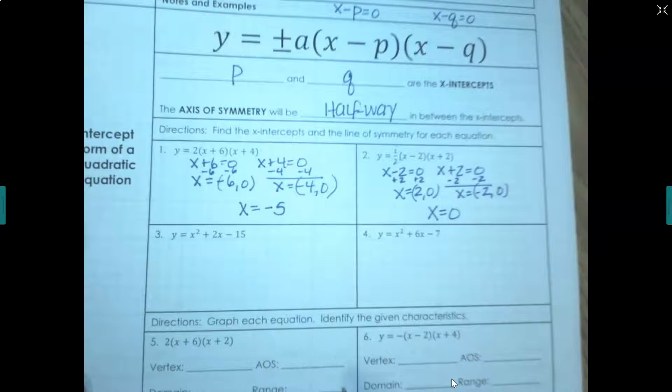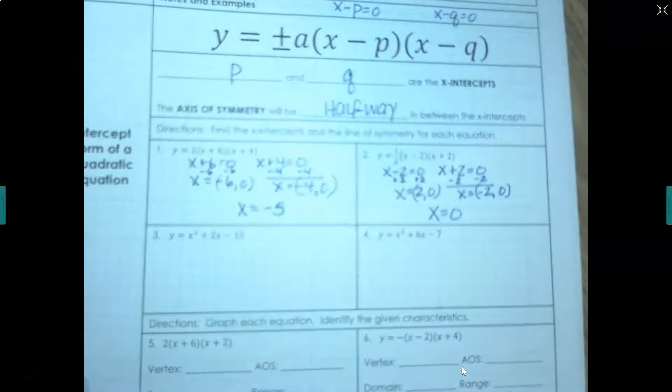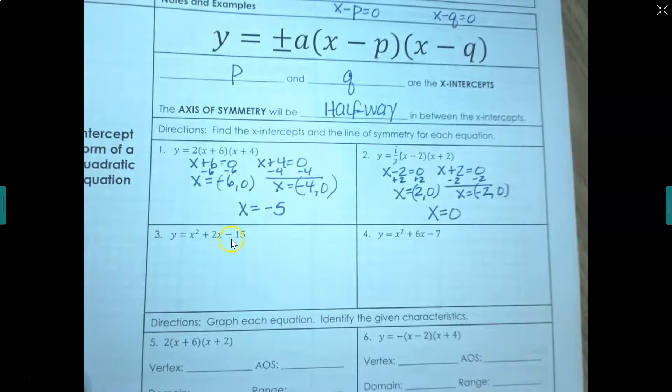So when we look at number 3, it has not been factored. We're still going to use Desmos for this. So let's go put this equation into Desmos and see if we can identify the x-intercepts here.